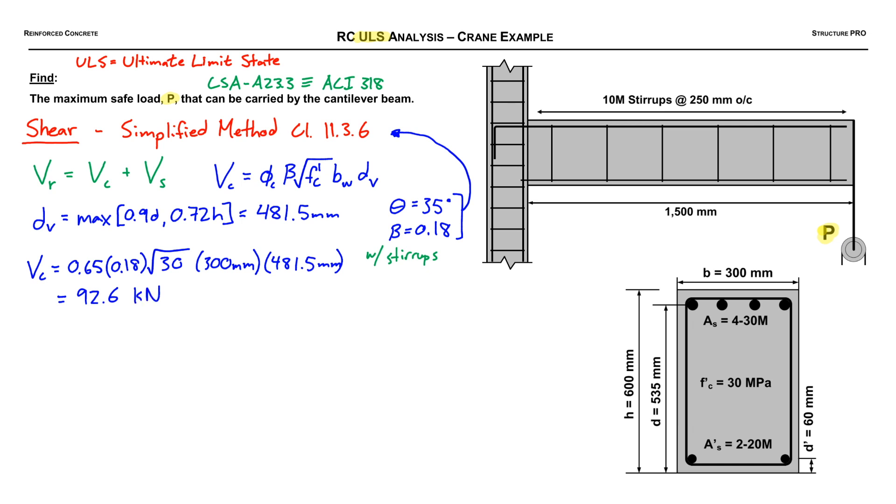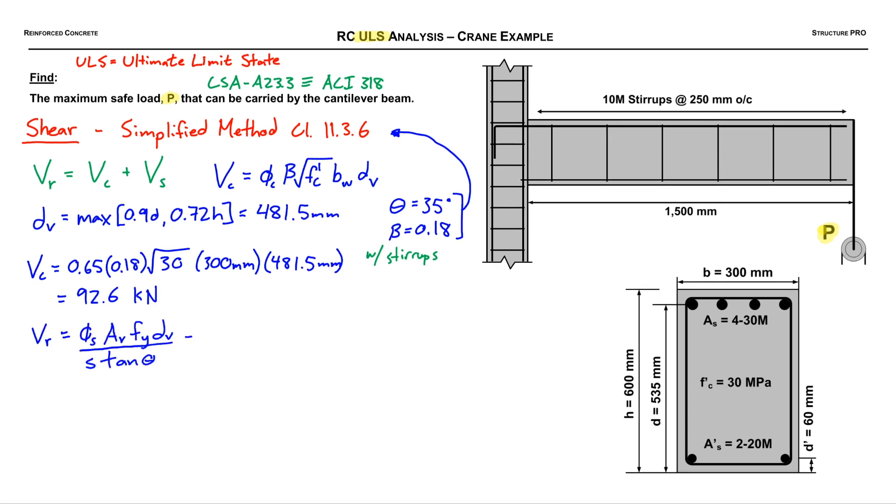Moving on to our VR equation, we have a few other parameters. We've got the theta that we got from clause 11.3.6, which is the crack angle. We also need AV, which is the shear reinforcement area. That's going to be two times our stirrup diameter. In this case we're using 10M bar, so that's going to be 200 millimeters squared.